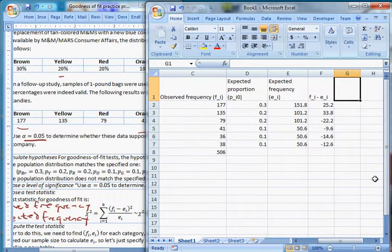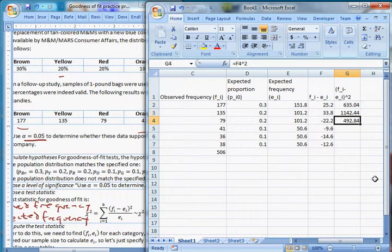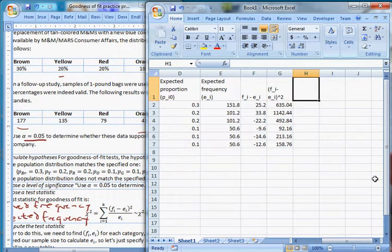The next thing we have to do is we have to square this. There's going to be f sub i minus e sub i, the quantity squared. So we take this one and we raise it to the second. That's the caret symbol, the squaring in Excel. And you just copy and paste these all the way down. And you get these squared.